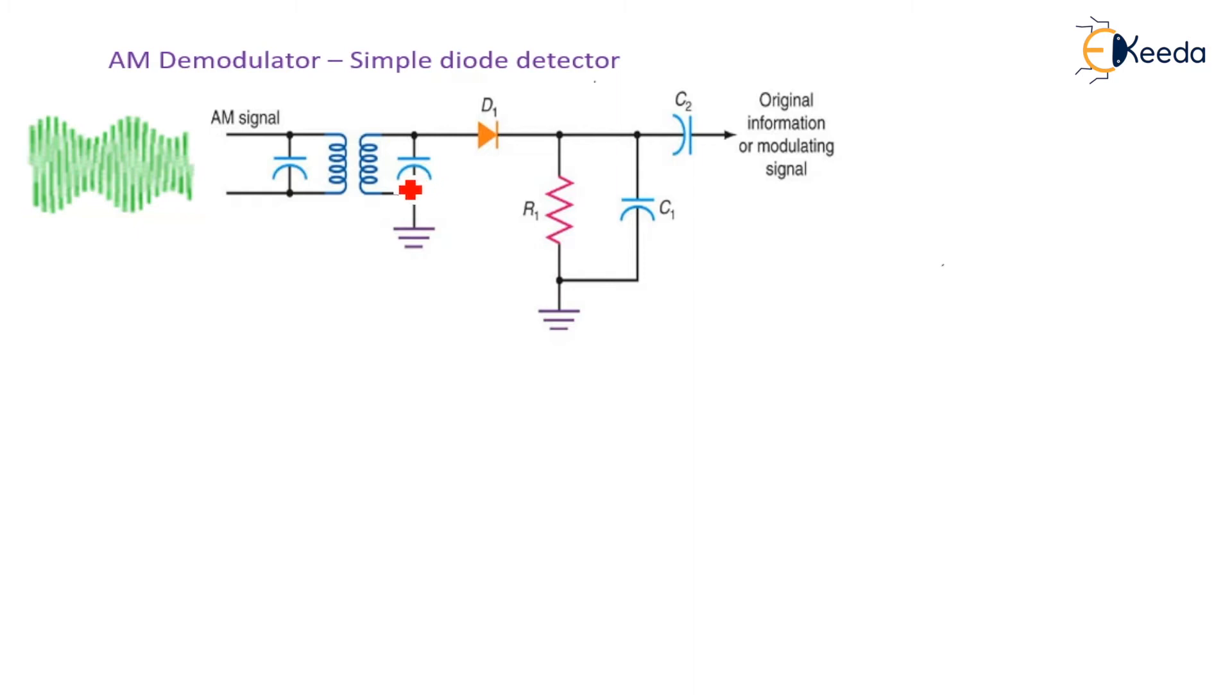The AM signal is transformer coupled and applied to a basic half-wave rectifier circuit. This is the basic half-wave rectifier circuit.